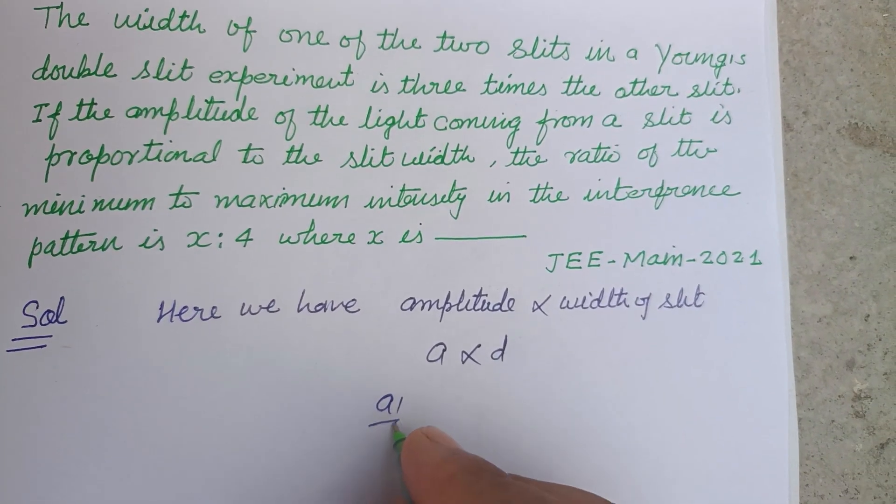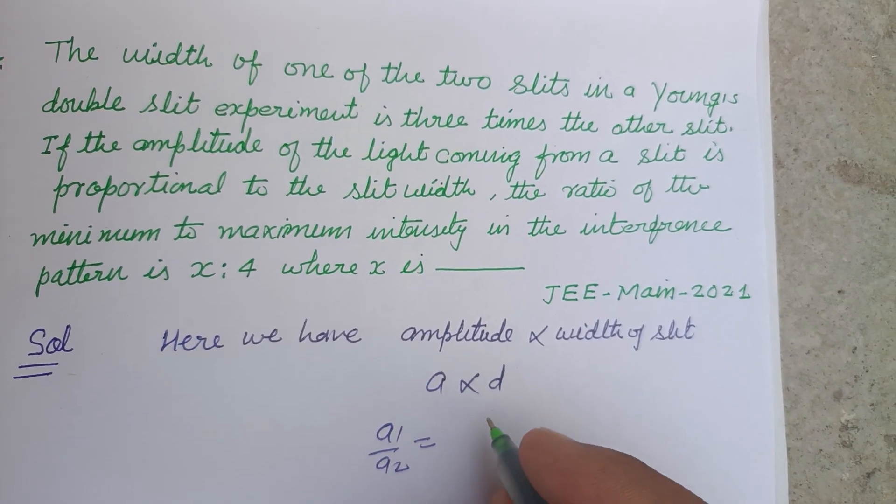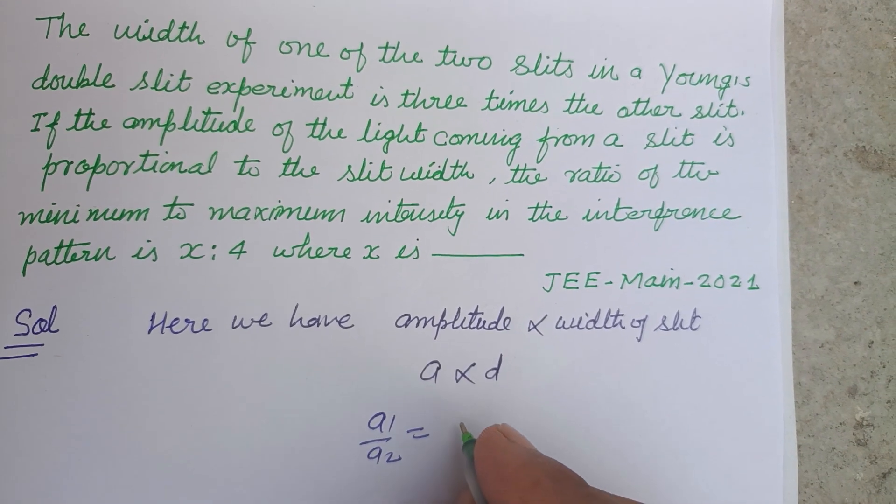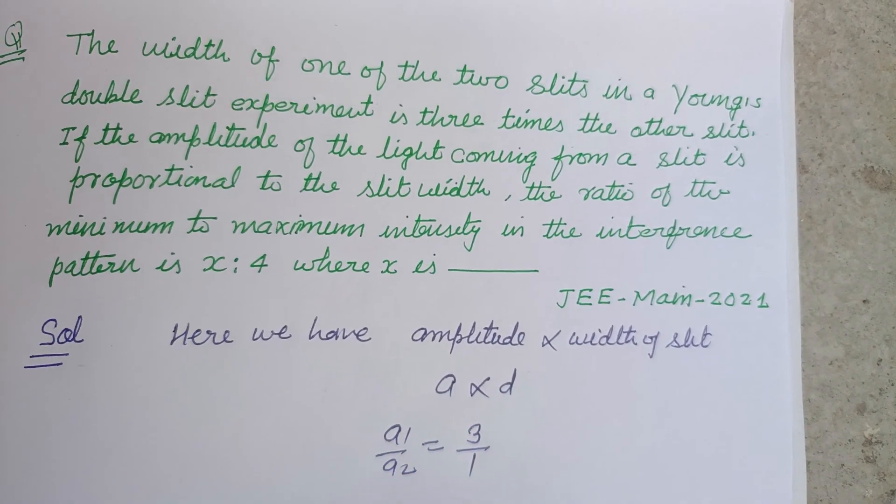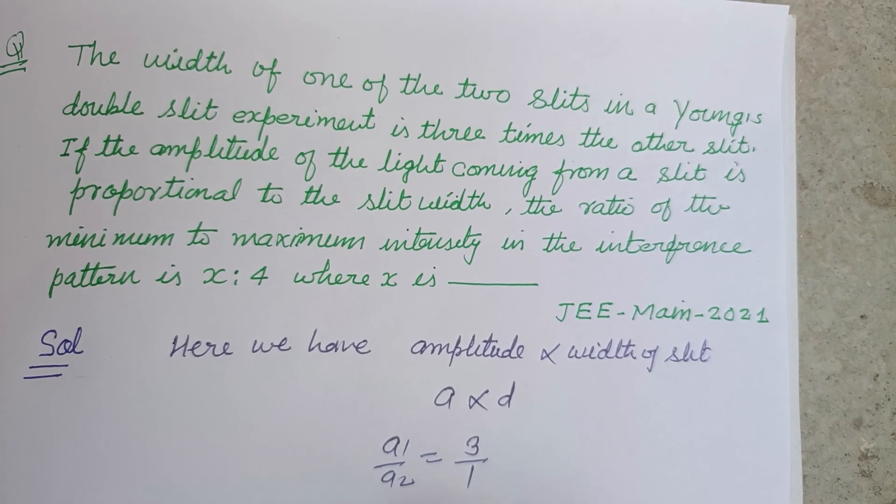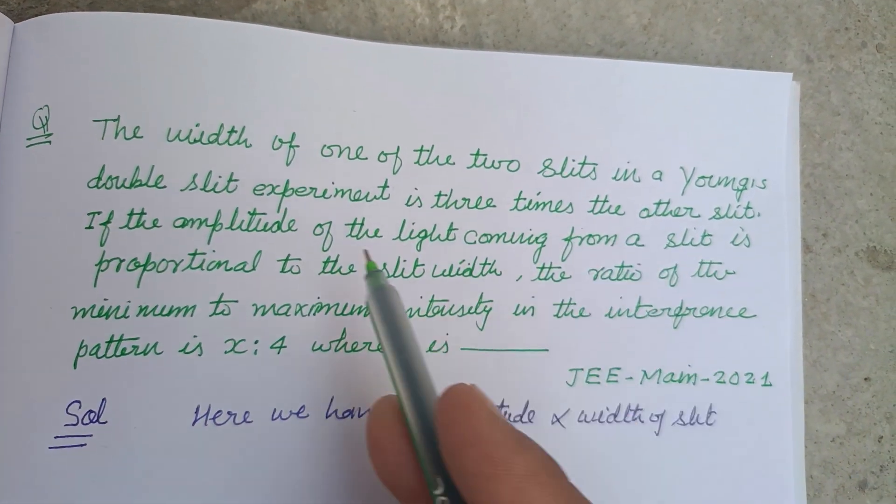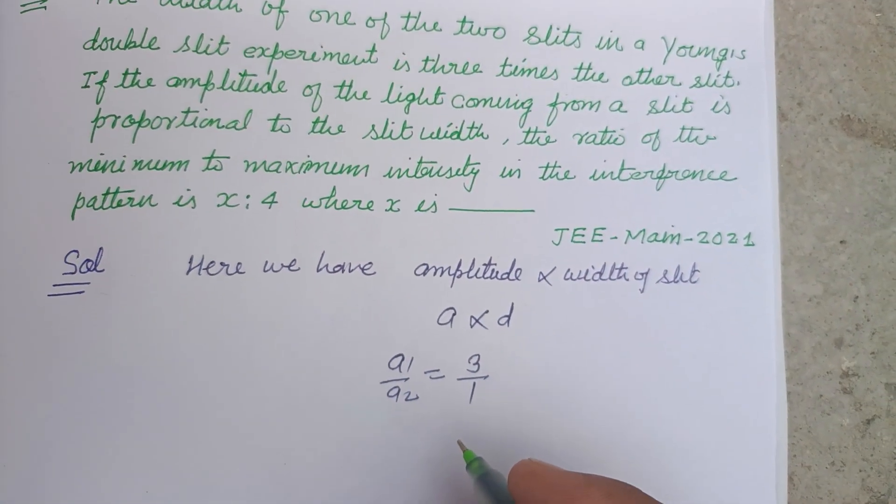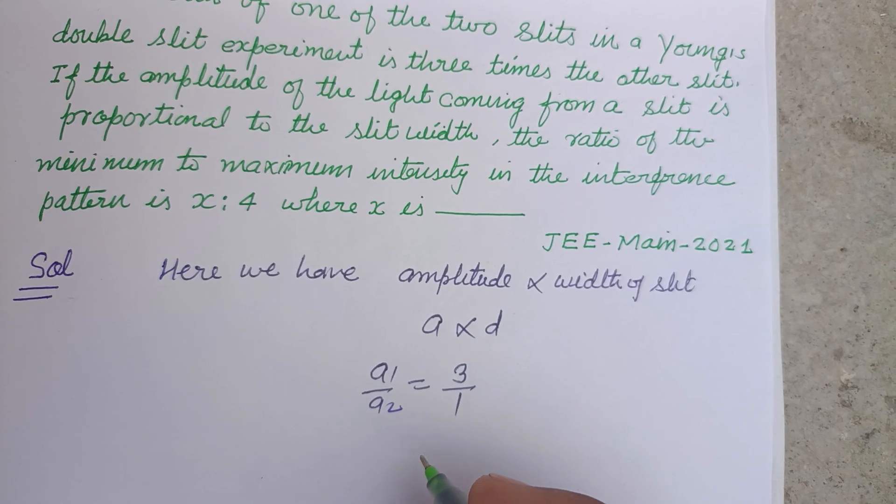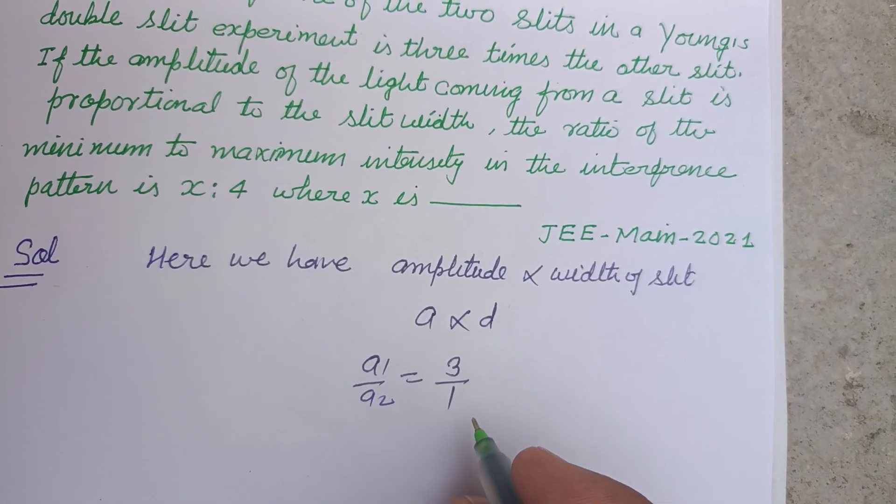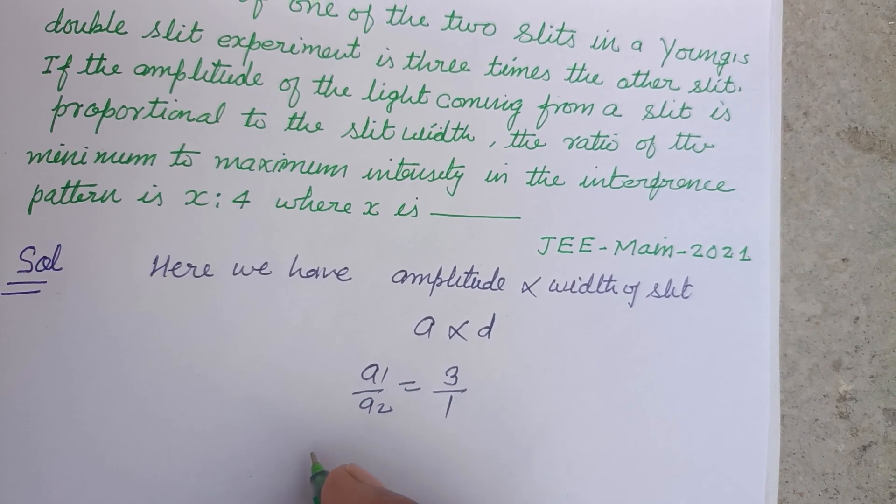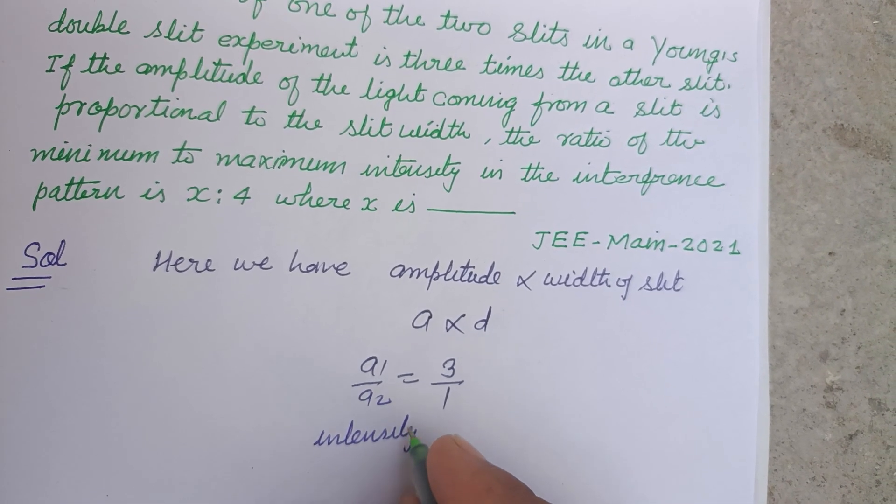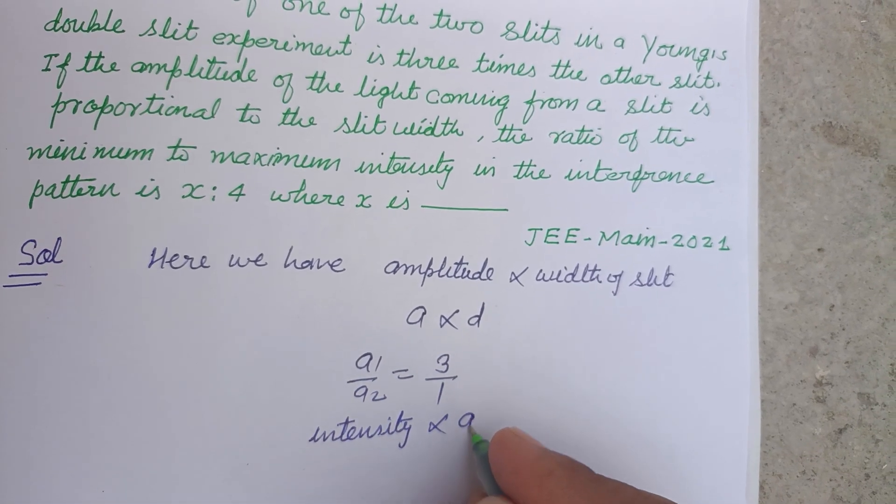So A1 upon A2 is equal to 3 ratio 1, because one of the slits in Young's double slit experiment is three times the other. So A1 upon A2 is equal to 3 over 1, intensity of light is directly proportional to A square.